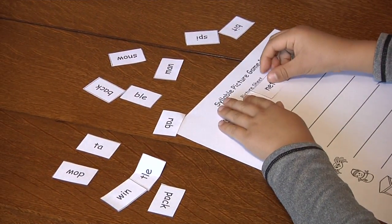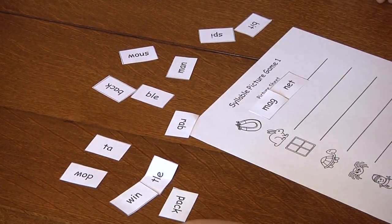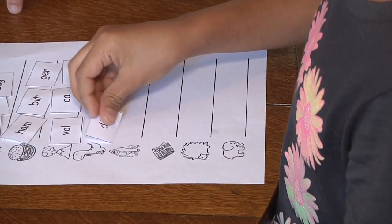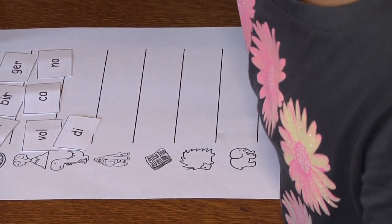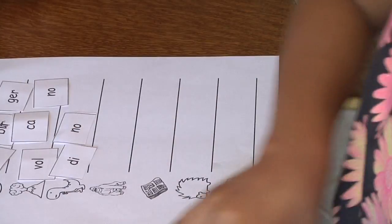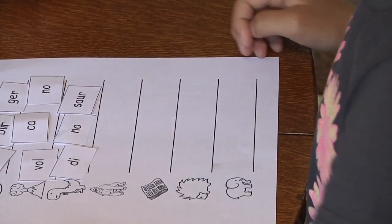Words are made up of one or more syllables, or units of sound. For example, 'word' has one syllable, 'spelling' has two syllables, 'computer' has three syllables. When children break words into syllables or smaller parts, they can often figure out how to pronounce the parts and then blend them back into a word they know.